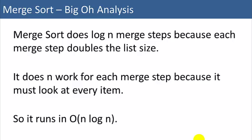Merge sort does log N merge steps because each merge step doubles the list size, and N is the number of items in the list. In the example with eight items, log base 2 of 8 is 3 — we went from one item per list to two, then four, then eight, so three merge steps. It does N work for each merge step because it must look at every single item for each step. So it runs in big O of N log N time — N work per merge step times log N merge steps — which is faster than most other sorting algorithms.